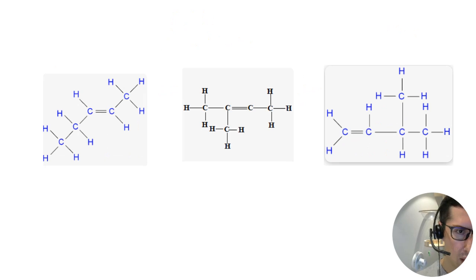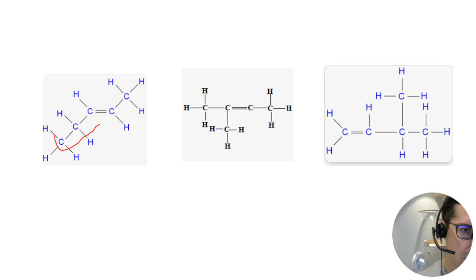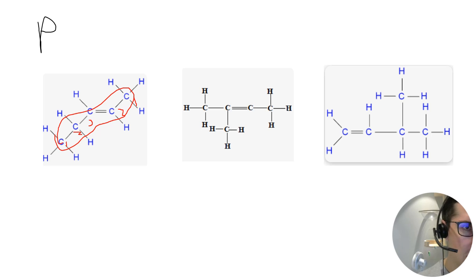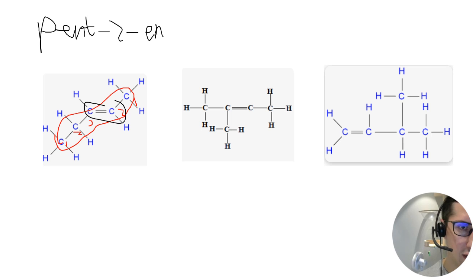Moving on to more examples. The longest chain here is five carbons. The double bond could be on carbon two or carbon three depending on direction — always go for the lowest number. Carbon two is lower, so this is pent-2-ene.